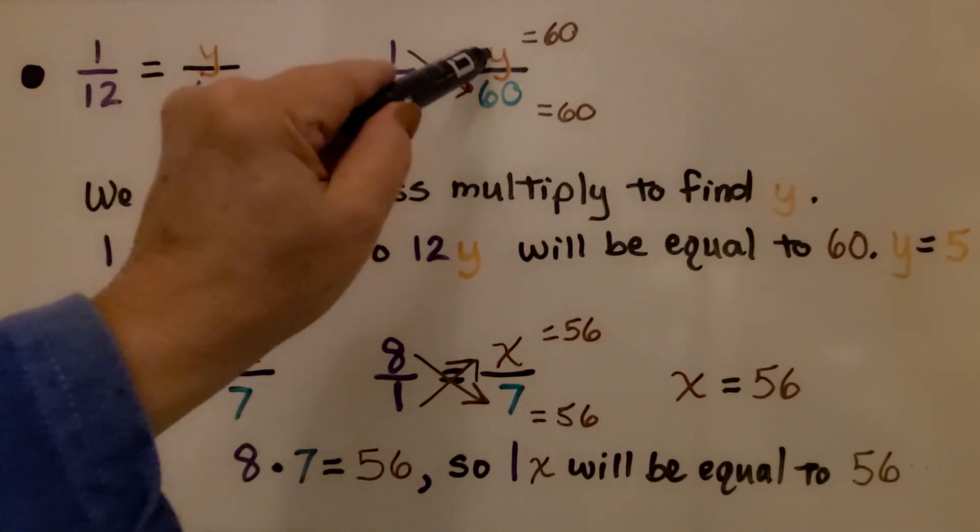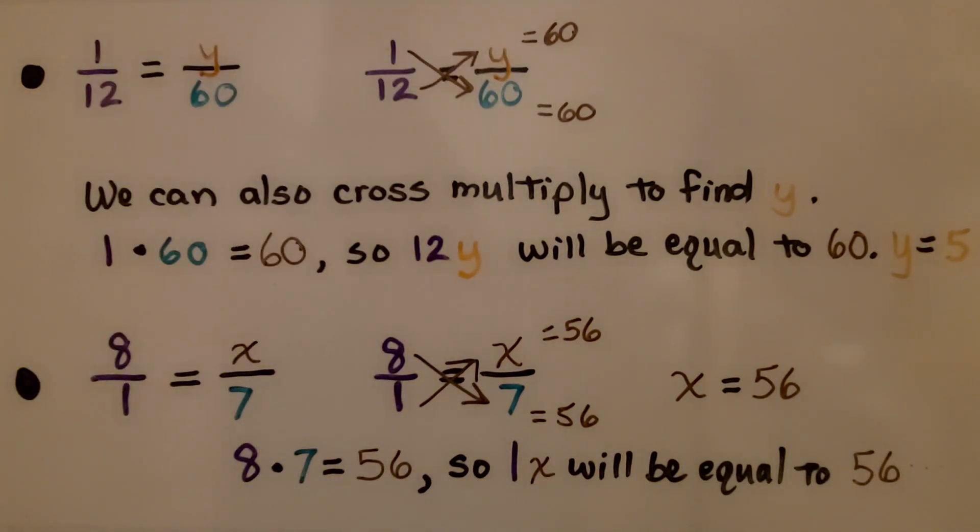And then we have 12y is equal to 60. Well that means y is going to be equal to 5.